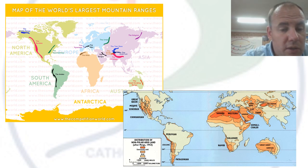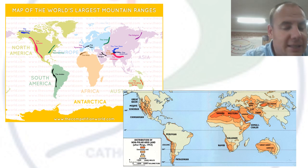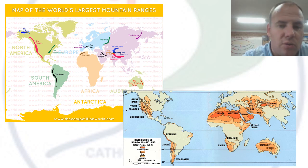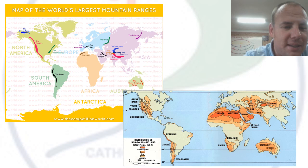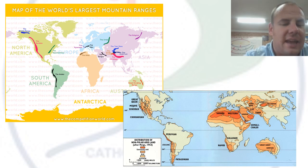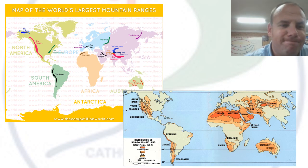When looking at the location of biomes, we need to consider both latitude and altitude — don't get those two mixed up. Altitude is how high above sea level you are; latitude is how far north or south you are from the equator.